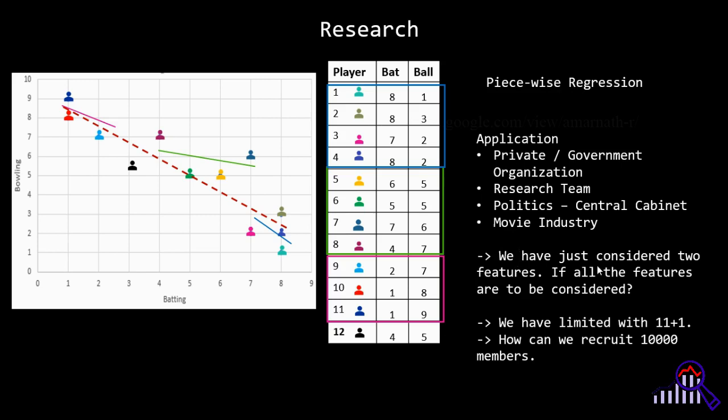Here we have just considered two features, namely bat and ball. If all the features are to be considered, well it is a research aspect. Of course we have limited with 11 plus one player. Similarly, if we want to recruit maybe 10,000 members into an organization, how can we do that? So those are the research aspects of this video.